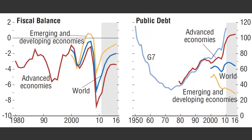How did governments pay for these deficits? They just paid for them by borrowing. That's why we see a very large run-up in public debt as a share of GDP. In advanced economies as a whole, the average is about 100% of GDP. There was an uptick in the world in general, but in emerging economies, debt as a share of GDP actually fell.